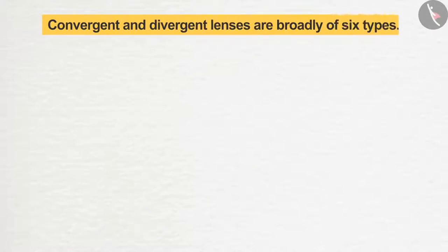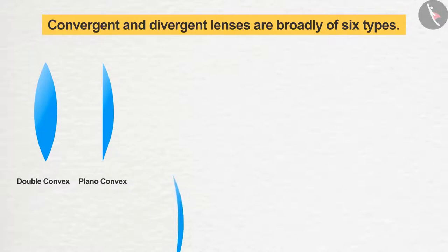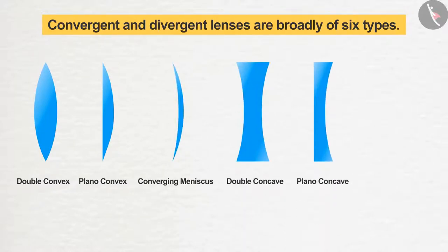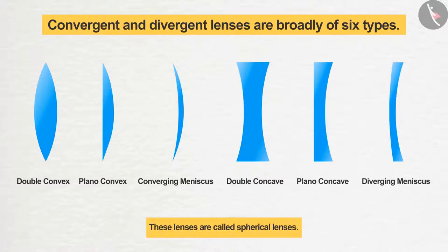Types. Convergent and divergent lenses are broadly of six types: double convex, plano convex, converging meniscus, double concave, plano concave, and diverging meniscus. These lenses are called spherical lenses.